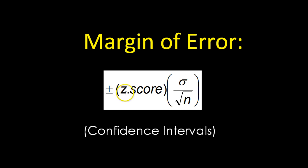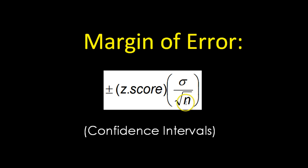By this way of calculating margin of error, we do plus or minus a z-score times the standard deviation divided by the square root of n. n is still the sample size. So you can see some similarities here, but now we have z-score and standard deviation involved.